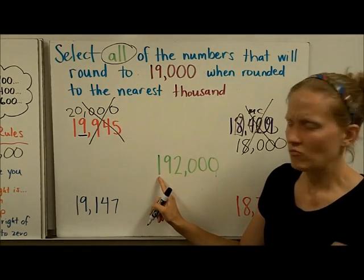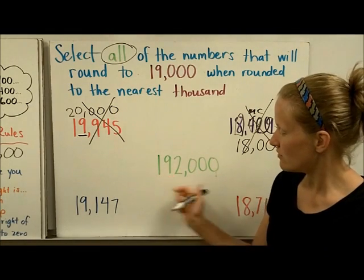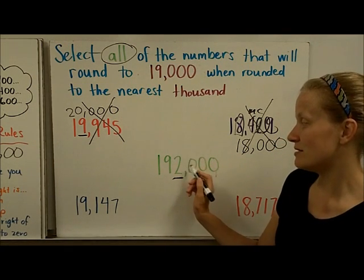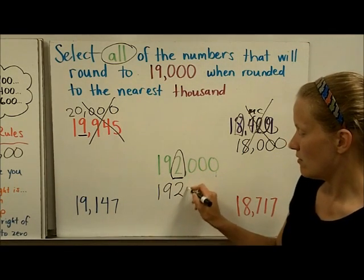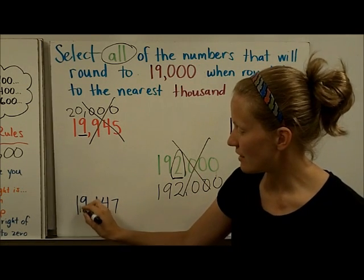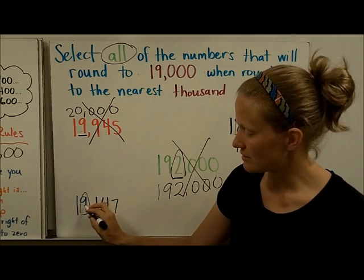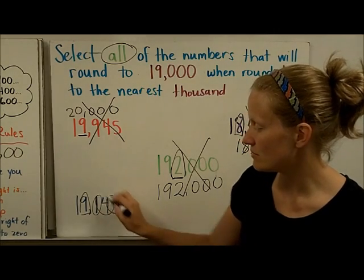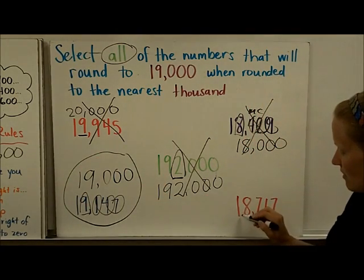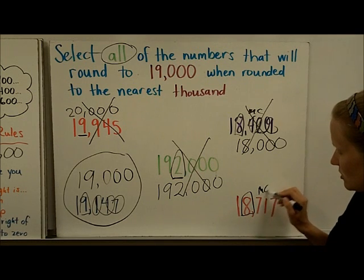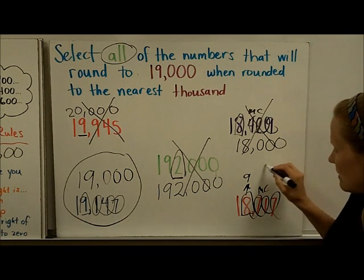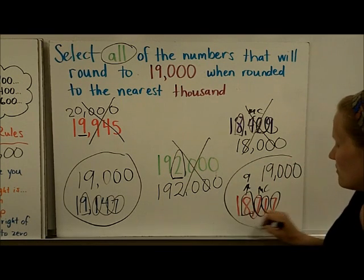Here, this number has an extra digit — I think they were trying to trick us with the same digits in the front — but looking at the thousands place, the 0 is going to tell the rocket to stay the same. That's going to be humongous, way bigger than 19,000. In this one, the thousands place: the 1 tells the 9 to stay the same, it doesn't blast off, and everything else becomes zeros — so this becomes 19,000, a correct answer. And in the last one, the thousands place: this 7 tells the 8 to go up 1 to a 9, everything else becomes zeros, and this one also rounds to 19,000 — another correct answer.